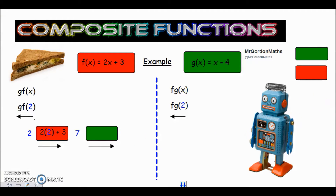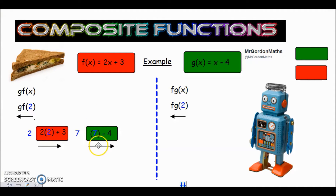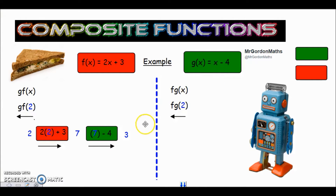The second function was quite simple — whatever x is, you take away 4. The output was 7, so our input for the second part is going to be 7. We do 7 take away 4, and that equals 3. So the final output, once we've travelled through both functions — we started with 2, put it into the red function, then put the answer into the green function — is 3. Have a go at the second question, see if you can work it out, and pause the video.